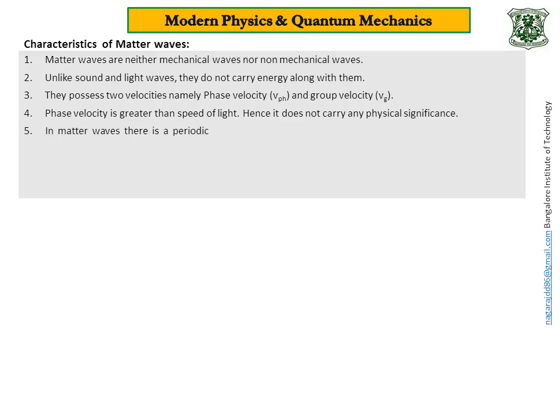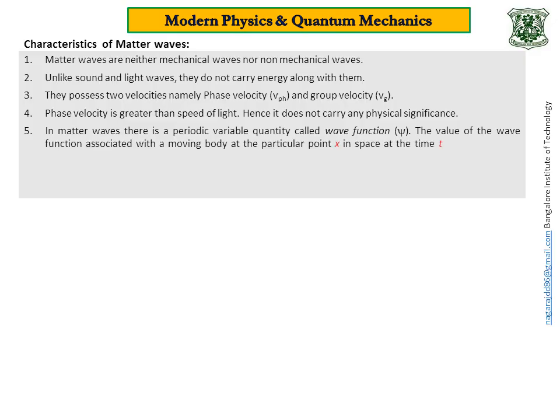Fifth one, in matter waves, there is a periodic variable quantity called wave function. The value of the wave function associated with moving body at a particular position x and in space at time t is related to the likelihood of finding the body. This is quite important. Likelihood of finding the body there. There means at that position and at that instant of time. I will elaborate the property number five in detail in my subsequent discussions.